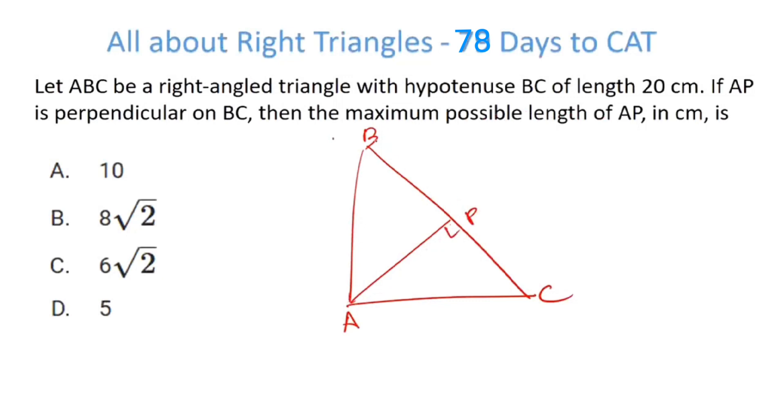Now understand this very clearly. We know that half of the hypotenuse is circumradius. So if I point, this is the midpoint, let's say D, then this is the circumradius. Circumradius in this case will be half of 20, so this is 10.